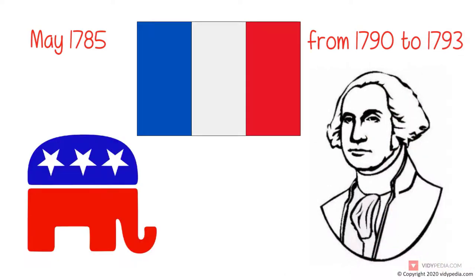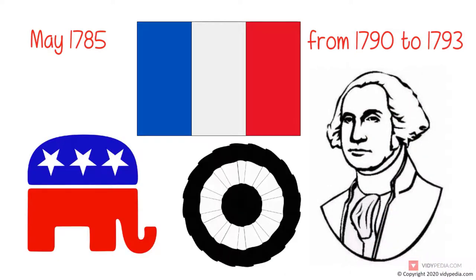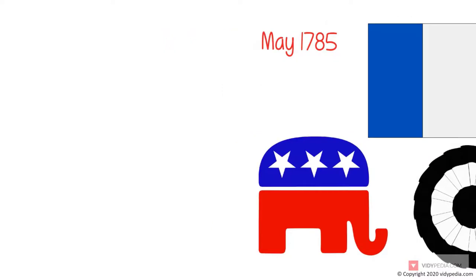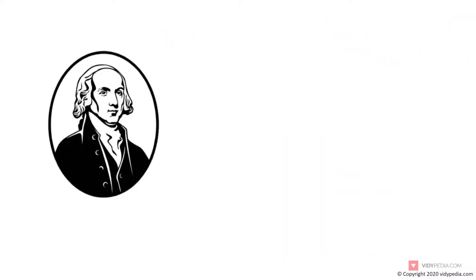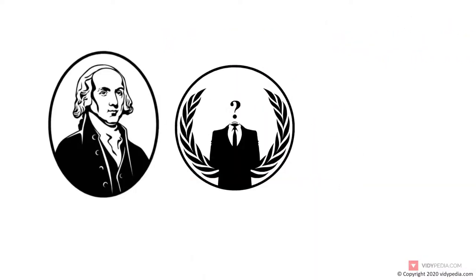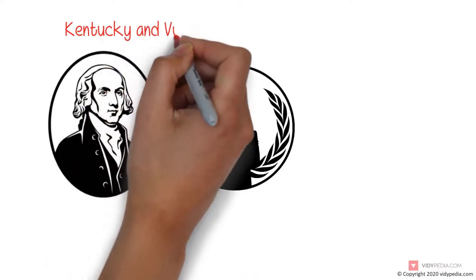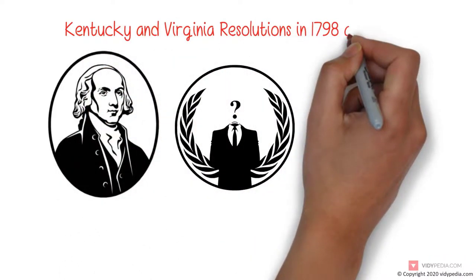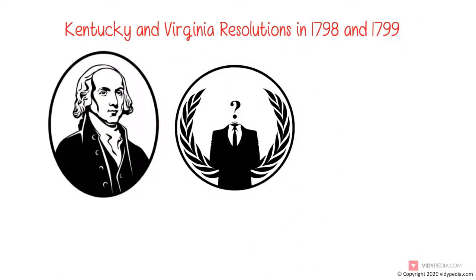Jefferson and James Madison organized the Democratic-Republican Party to oppose the Federalist Party during the first party system formation. With Madison, he anonymously wrote the provocative Kentucky and Virginia resolutions in 1798 and 1799, which sought to strengthen states' rights by nullifying the Federal Alien and Sedition Acts.